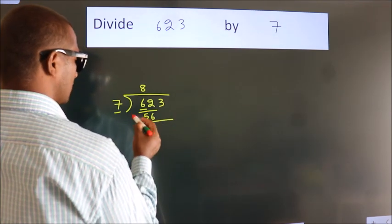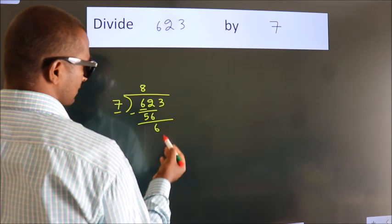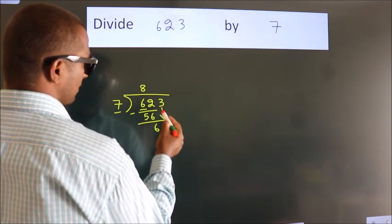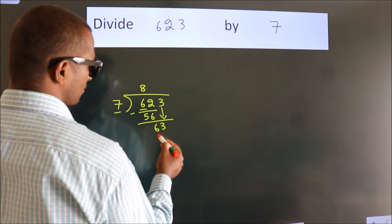Now we should subtract. We get 6. After this, bring down the next number. So 3 down. So 63.